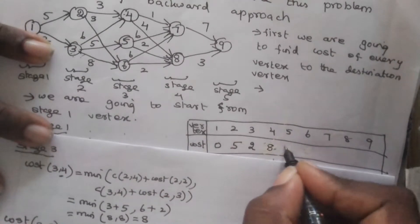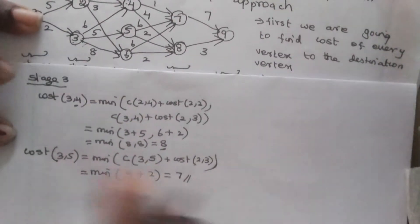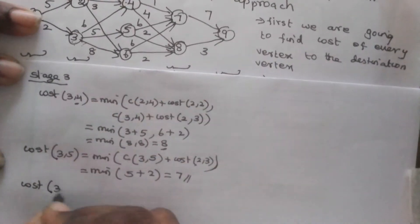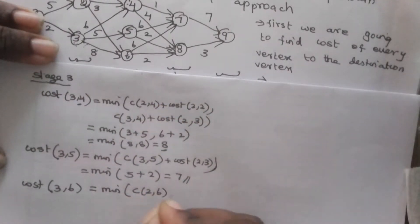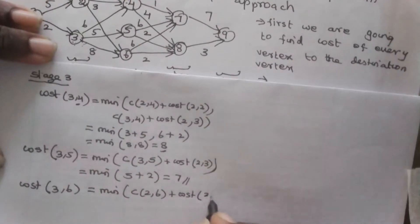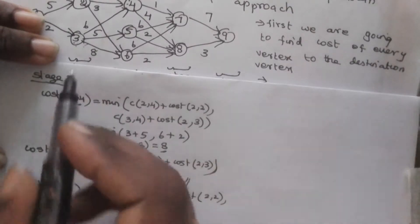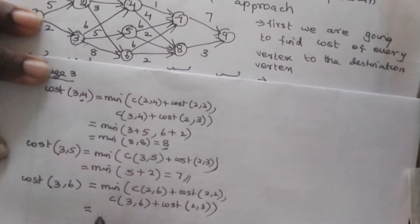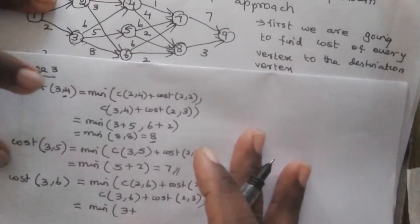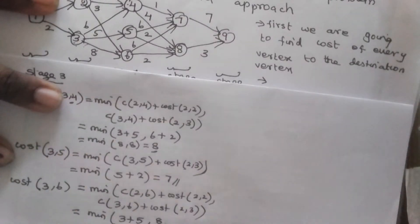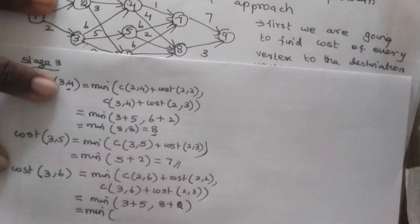Now we find cost(3,6) = minimum of C(2,6) + cost(2,2) and C(3,6) + cost(2,3). Cost(2,2) is 5, C(3,6) from the graph is 8, and cost(2,3) is 2. So minimum of 8 and 10 is 8. Cost(3,6) = 8. The minimum value is obtained from vertex 2, so D = 2, and these are stored in the table.